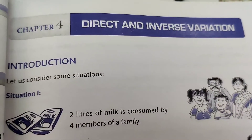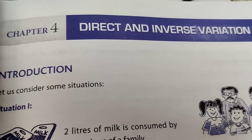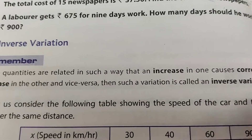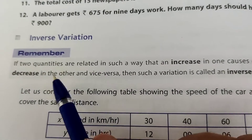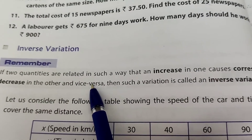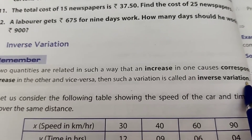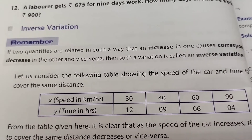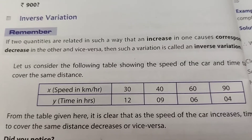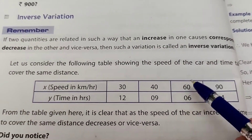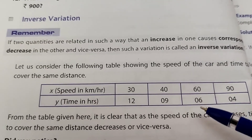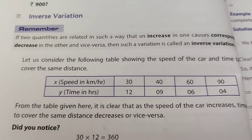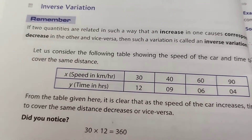This is worksheet 2 of the chapter Direct and Inverse Variation, based on inverse variation. In inverse variation, if two quantities are related such that an increase in one causes a corresponding decrease in the other and vice versa, then such a variation is called inverse variation. For example, speed and time — if we increase speed, time decreases. Another example is number of men and days.